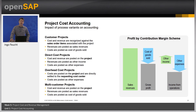Direct cost projects are mainly intended for internal purposes — non-customer facing activities. A good example would be a research and development project. The costs that incur on a direct cost project remain on the project. As direct cost projects can be assigned to market segments, the costs are available in profit and loss reporting as well, showing up as other expenses in the profit analysis by contribution margin. Usually, direct cost projects do not generate revenues, but it is possible to post manual customer invoices to direct cost projects — for example, if certain costs of a research and development project can be charged to a client or grantor. These revenues are posted as other revenues.